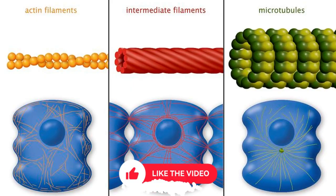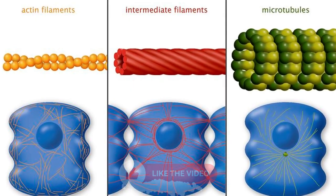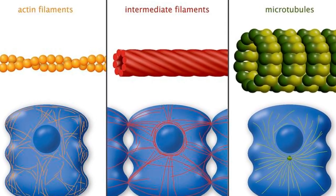Structure of the cytoskeleton. The cytoskeleton is made of three main types of protein fibers, each with a unique function.